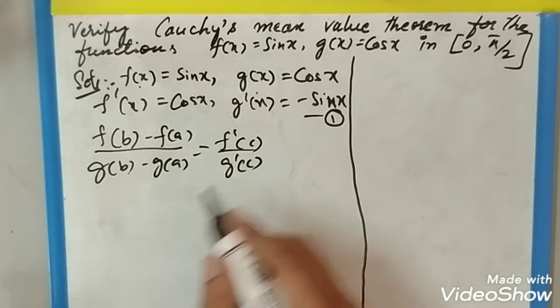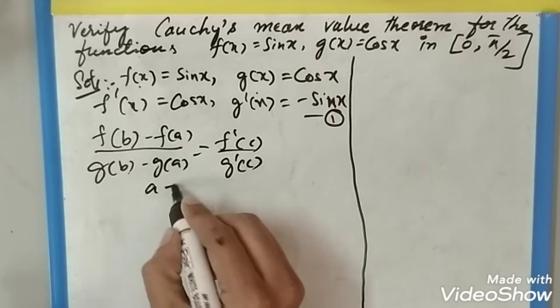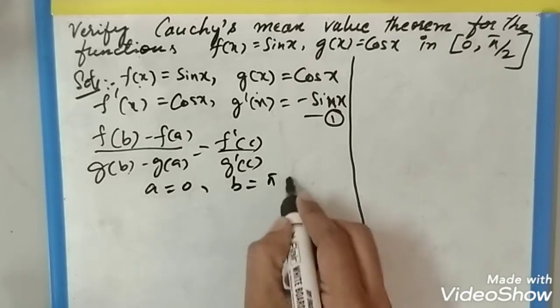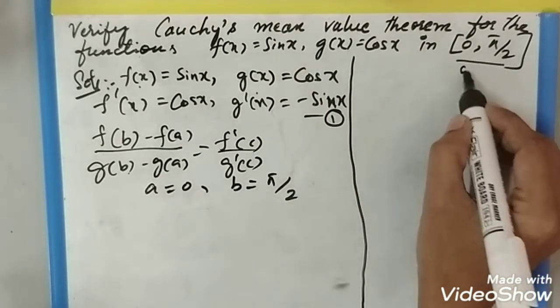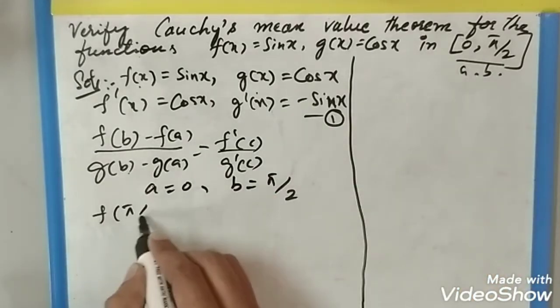Our b and a are: a is 0 and b is π/2, that is the interval given here. This is a and this is b. Now substitute f(π/2) - f(0) divided by g(π/2) - g(0).